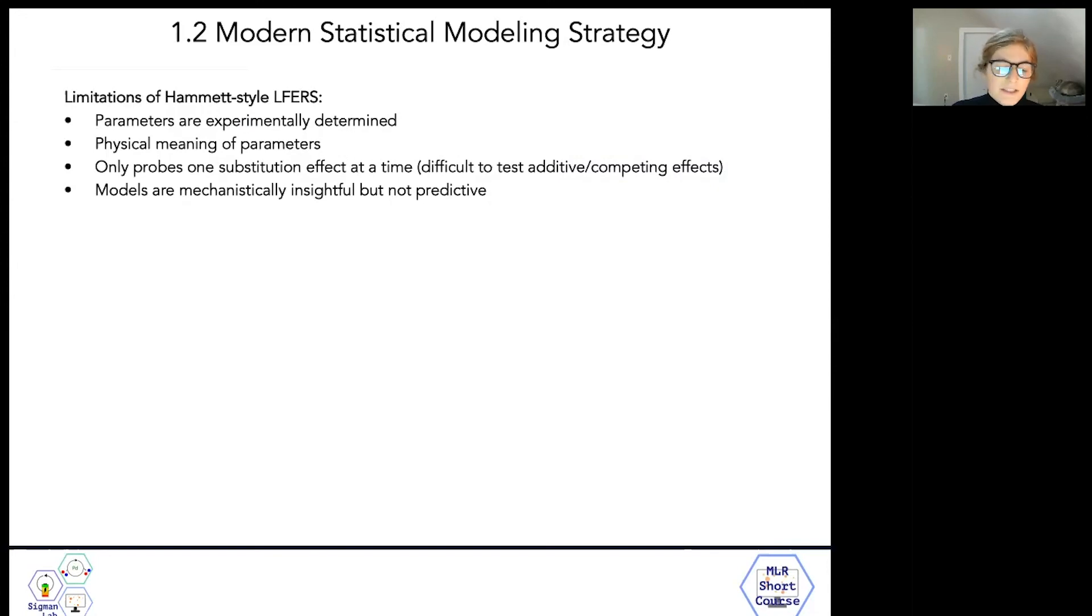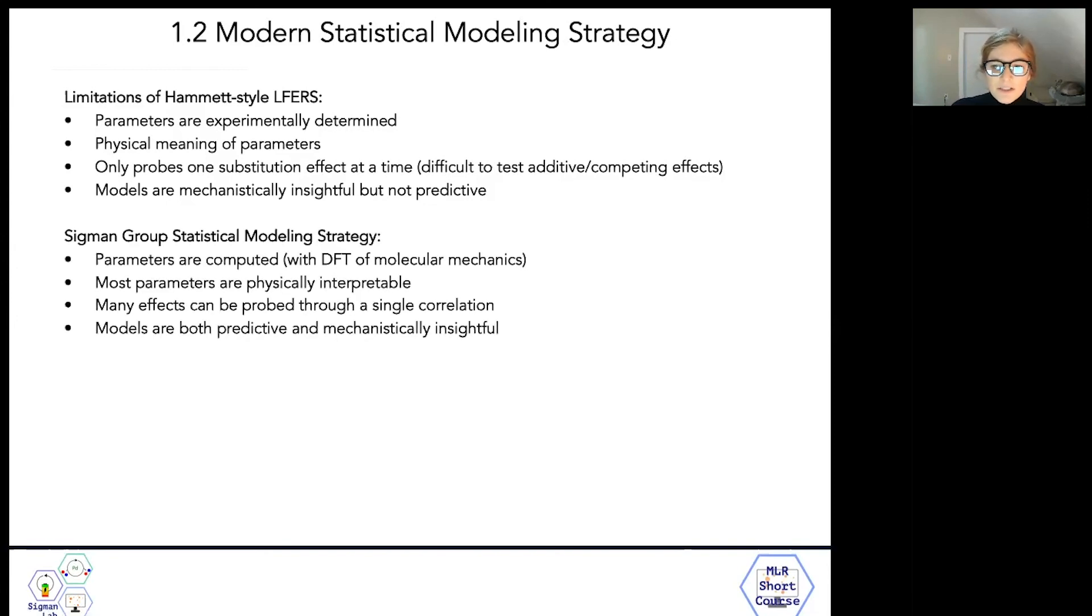So to summarize this video and module one as a whole, I'll once again return to our list of limitations of Hammett-style linear free energy relationships. But this time, I'll focus on how our group's modern statistical modeling strategy compares. While early descriptors were empirically derived, the parameters we use now are predominantly calculated using DFT or molecular mechanics. And for the most part, the physical interpretations of these parameters is quite clear. Using our modern statistical modeling scheme, we're able to test the effect of varying many different reaction properties, from substrate substituents like Hammett did, all the way to solvents. And finally, perhaps most importantly, the models that we make today have the capability to simultaneously interrogate reaction mechanism while aiding in reaction optimization through their predictive abilities.